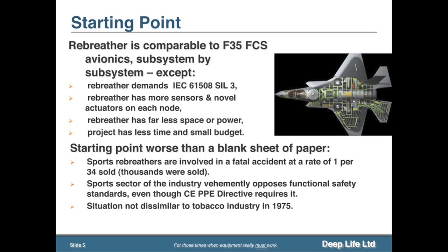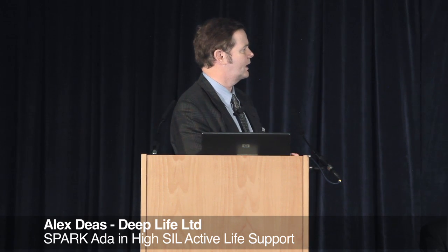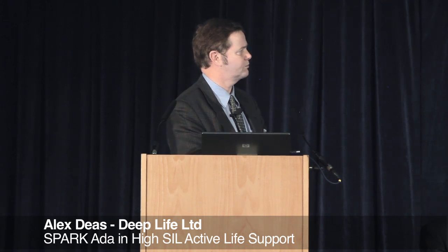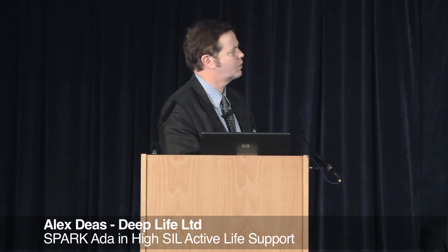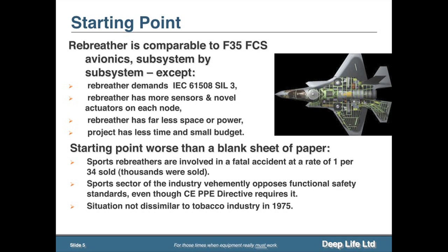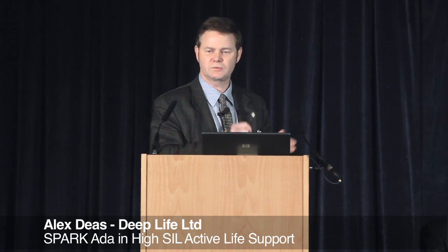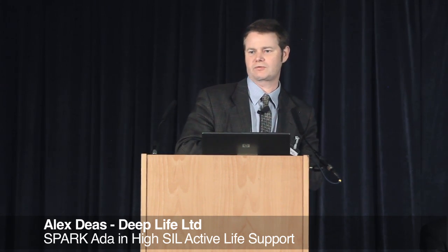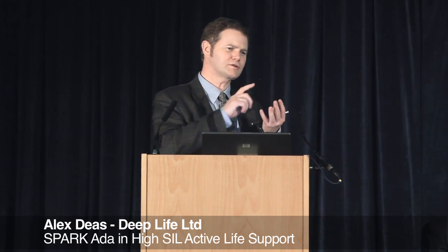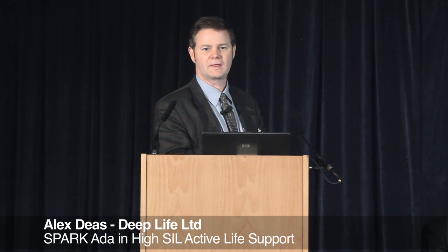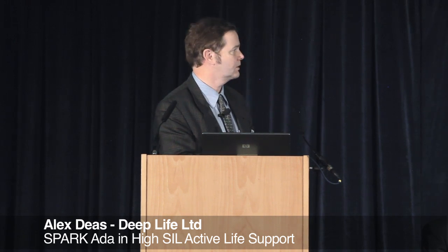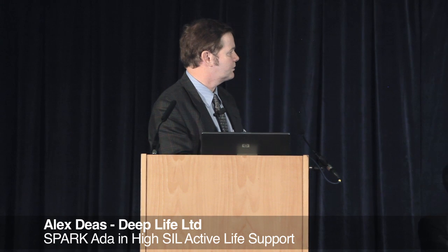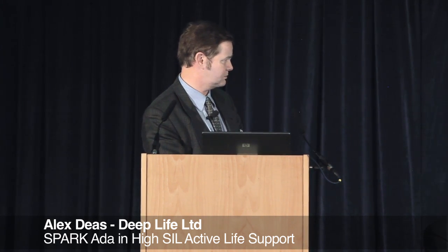The starting point for this project is comparable to doing an avionics project - very similar subsystem for subsystem. The rebreather demands, instead of the DO standards, IEC 61508 SIL 3. Avionics systems usually go between SIL 2 and SIL 3 border; here it's required at high SIL 3. The rebreather has more sensors and novel actuators - things like variable orifice gas injectors which are laser-monitored with imaging systems to check the position of the orifice, or a bailout device that couldn't use stepper motors or DC motors - memory wire had to be developed from scratch and put through millions of cycles of test under conditions to 350 metres. The rebreather has much less space, power, time, and budget.